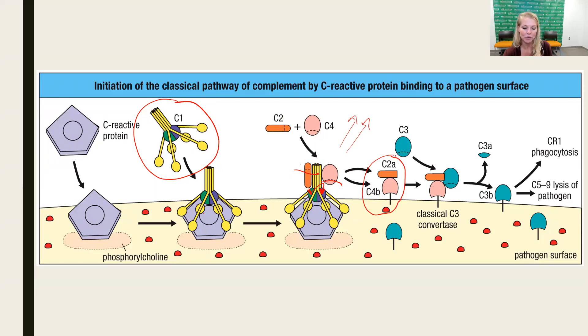That means it will cleave C3 again and again and deposit lots of C3B on the surface because the C3As go away, the anaphylatoxins. We can either have opsonization occur because of all the C3Bs on the surface, or we can start to bring in C5 through C9 to make the membrane attack complex.